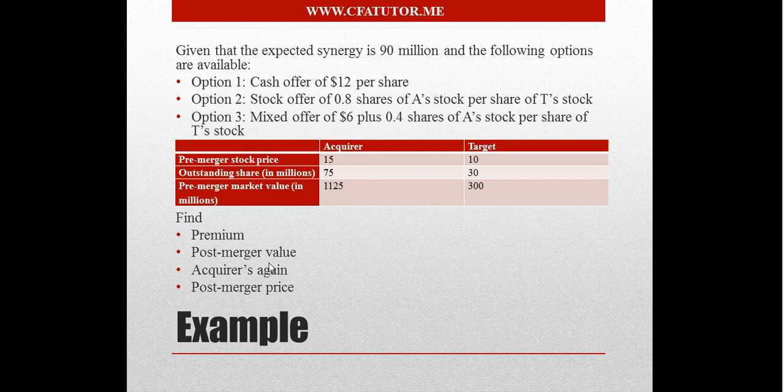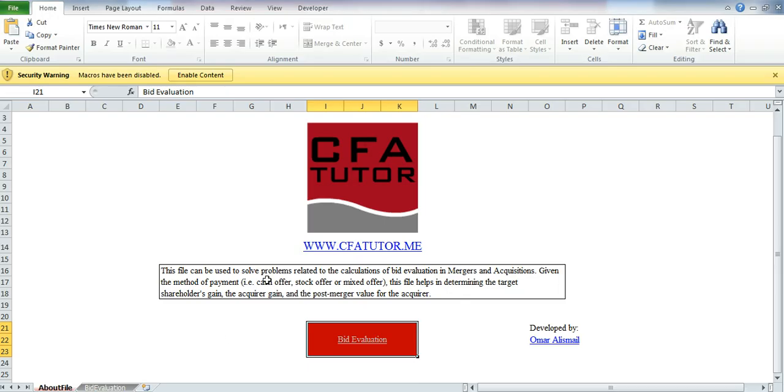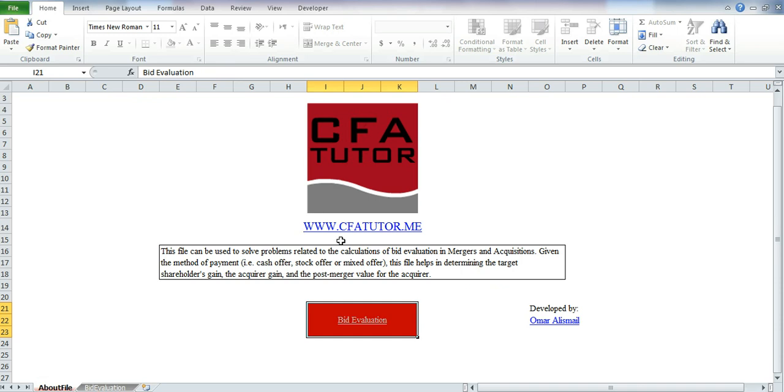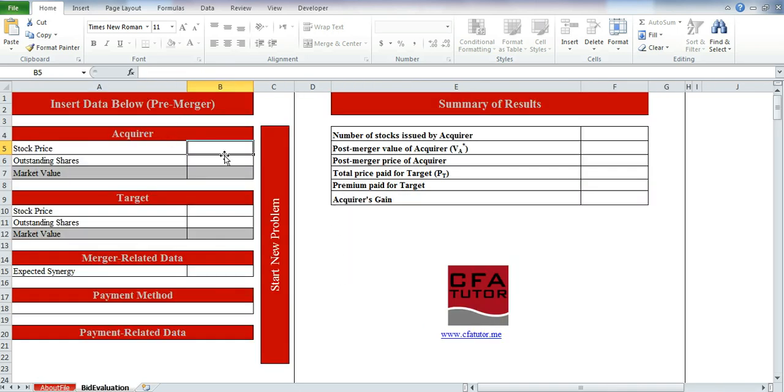And we have been asked to find the premium, the post-merger value, the acquirer gain, and the post-merger price. If we go to the file over here, and as usual, you should always enable the content in order to enable the macro.